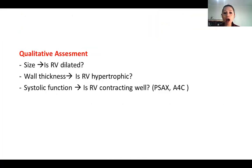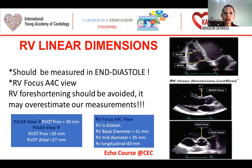Qualitative assessment of RV consists of size, wall thickness, and systolic function. So the questions in our minds are: Is RV dilated? Is RV hypertrophic? Is RV contracting well? For this reason, we measure the linear dimensions. They should be measured in end-diastole and we should use an RV-focused 4-chamber view. RV foreshortening should be avoided because it may overestimate our measurement.